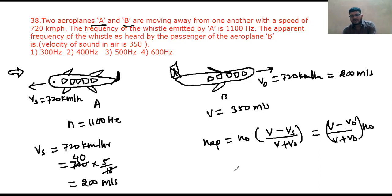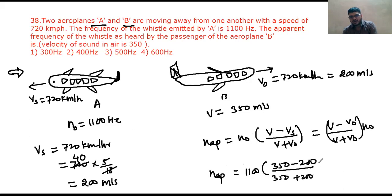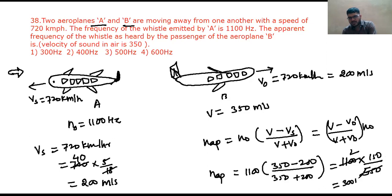N apparent equals 300 hertz. Pause the video and note it down. Next question: an engine is moving on a circular path of radius 100 meter with a speed of 20 m/s. The observer is stationary at the center. The frequency of the whistle is 500 hertz. In this case, there is no Doppler effect when observer is at center. Therefore N dash equals N naught equals 500 hertz, and option 3 is the answer.